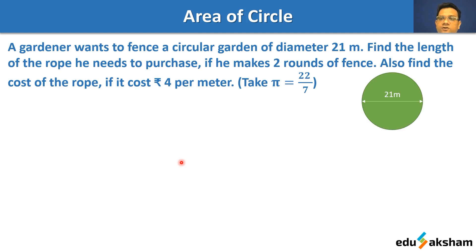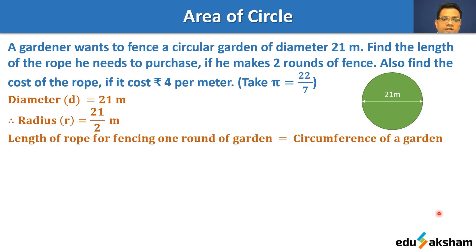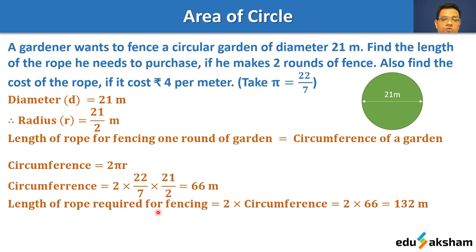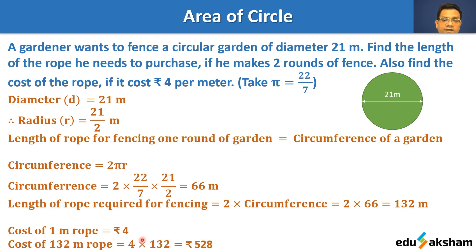A gardener wants to fence a circular garden of diameter 21 meters. Find the length of rope he needs if he makes two rounds of the fence, and also find the cost at rupees 4 per meter. Using pi as 22 by 7: radius is 21 by 2 meters. Circumference equals 2πr = 2 × (22/7) × (21/2) = 66 meters. For two rounds, total rope = 2 × 66 = 132 meters. Cost = 4 × 132 = rupees 528.